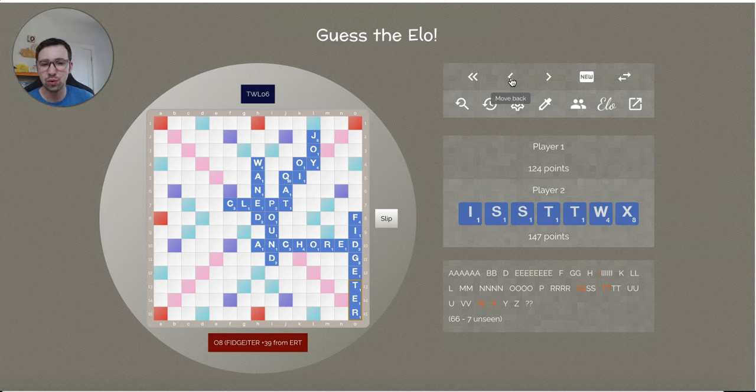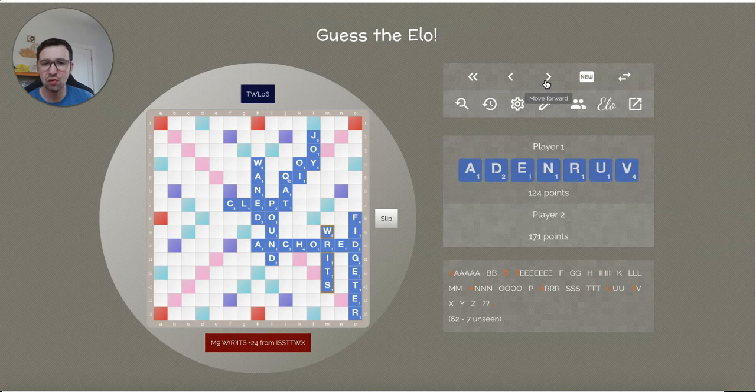Player 1 plays Fidgeter. That's a really nice play. Not like an obscure word or anything, but it's always tough to see those extensions. So a nice play there by Player 1. Player 2 draws poorly. Twixt, maybe? I guess to the T in Fidgeter. That looks reasonable. Keeping S, S, T. There's not a whole lot of options with this many consonants. Ritz is fine. Yeah, keeps X, S, T. I don't mind that. I'd probably have gone with Twix, just because you do have the Pounce Hook, which is really good for bingoing. But nothing wrong with that either.